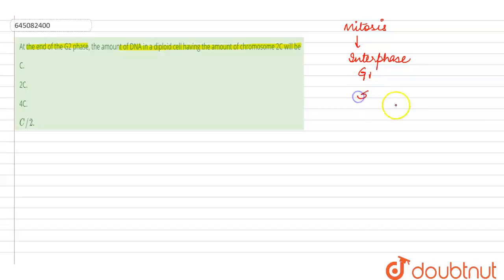So here we have three phases of it: G1 phase, S phase and G2 phase.